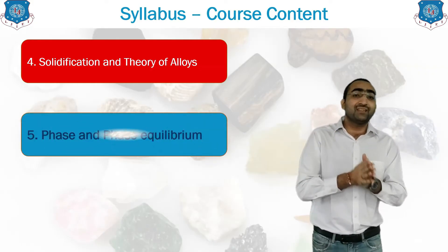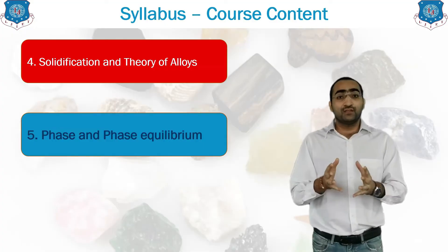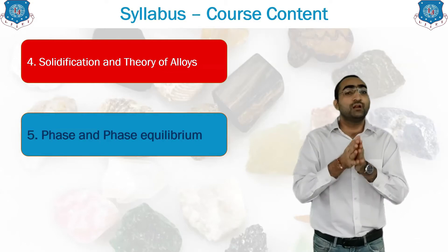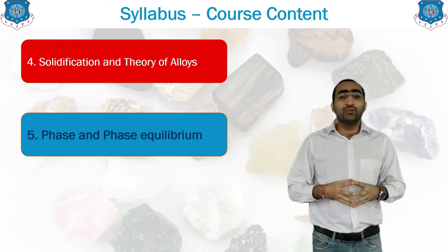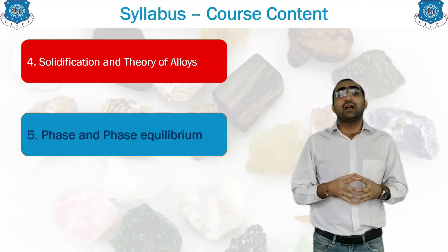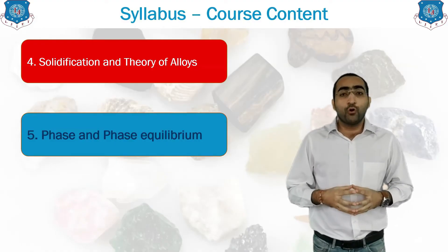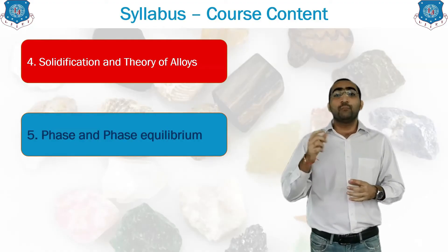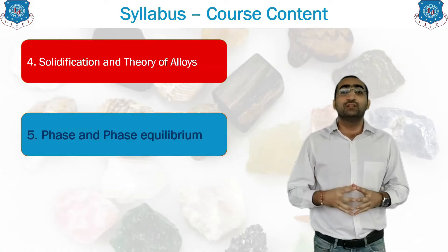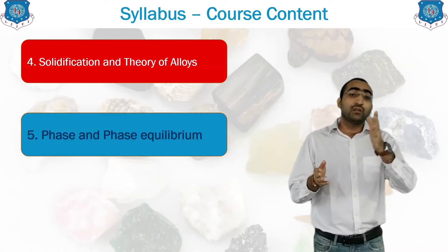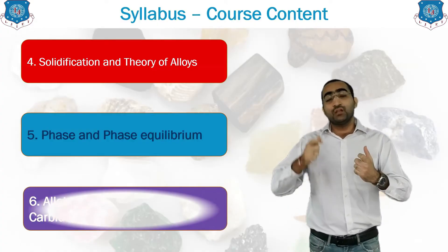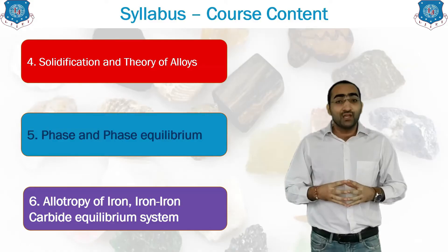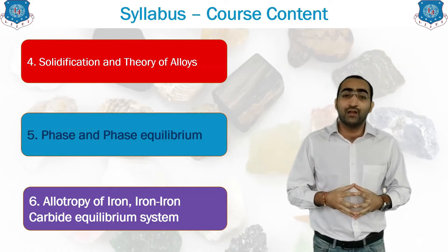The fifth unit is the phase and phase equilibrium — which are the different phases occurring in a material and at what proportion we will be mixing for making the alloy. The sixth unit is the allotropy of iron and the iron-carbon equilibrium diagram. It is the most important topic of Material Science and Metallurgy because it is regarding iron, which is one of the major engineering materials used nowadays. How iron behaves, how cast iron and steel are prepared, and at which temperature and percentage of carbon we get different phases of iron are all included in unit number six.